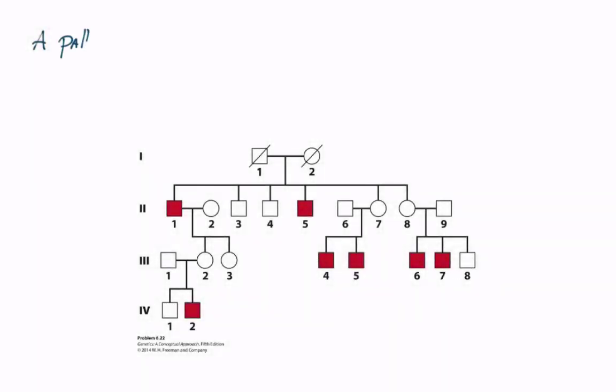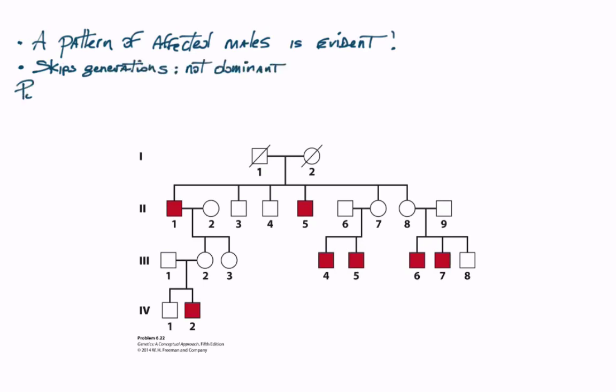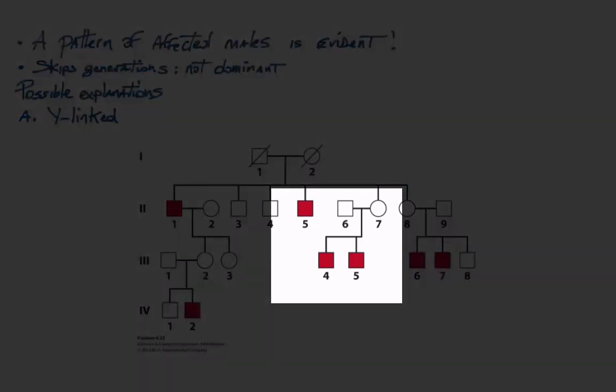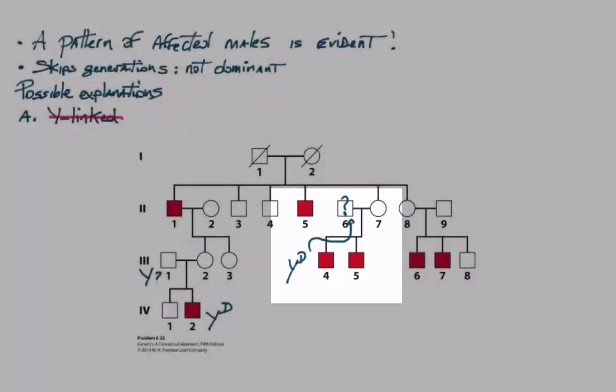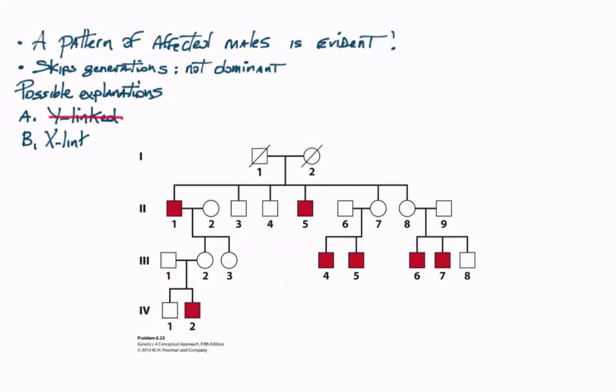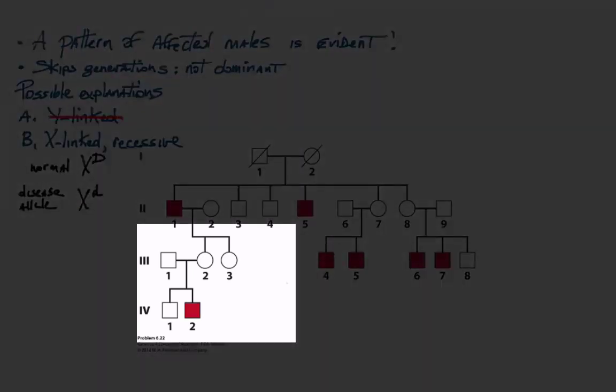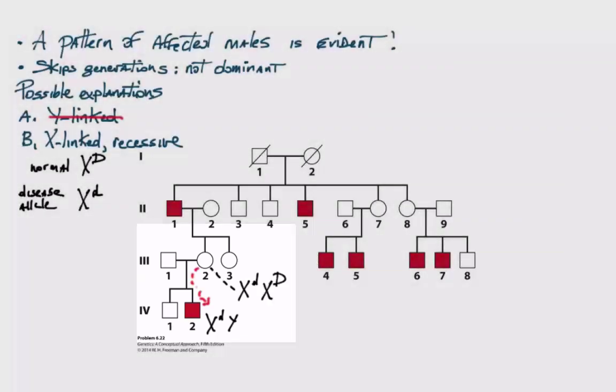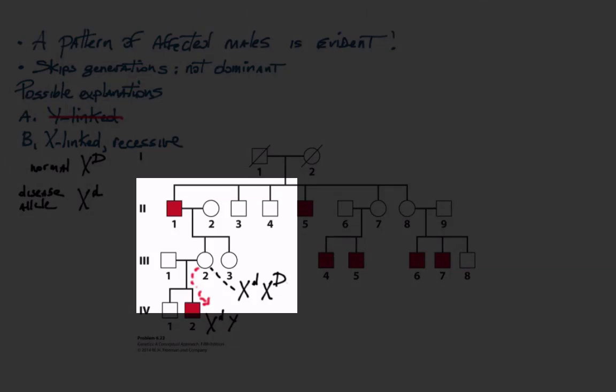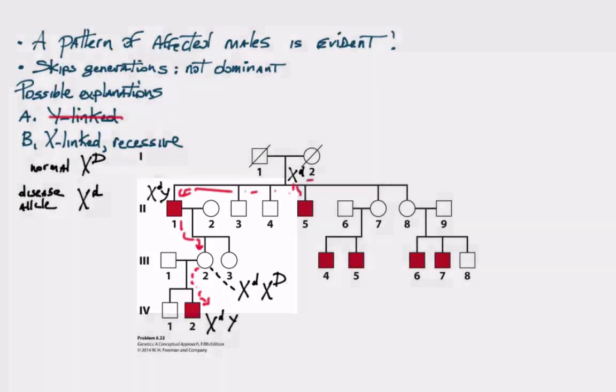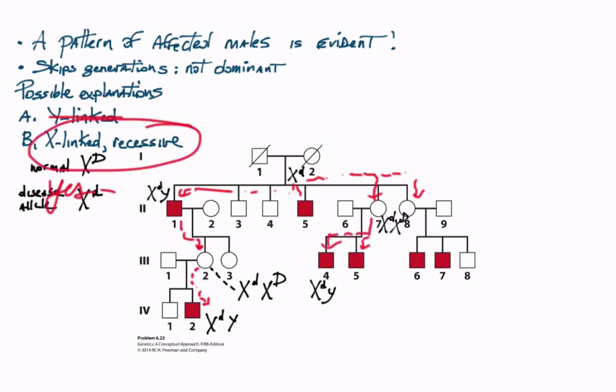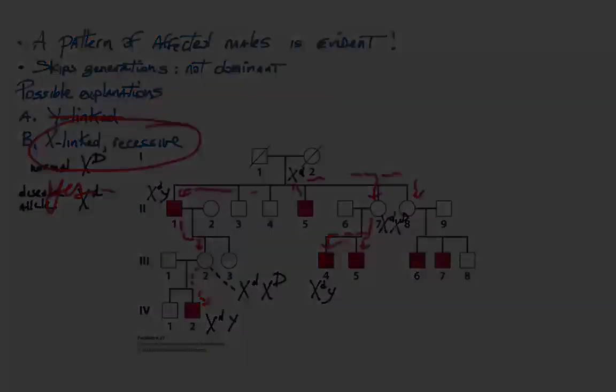Let's look at another pedigree where all affected individuals are males and generations are skipped. The condition cannot be Y-linked because individual two-six is unaffected. Let's consider instead X-linked recessive as a possibility. Male four-two inherited his X little d from heterozygous mom, who in turn inherited it from her dad, and so on. The rest of the pedigree displays inheritance patterns consistent with this hypothesis.